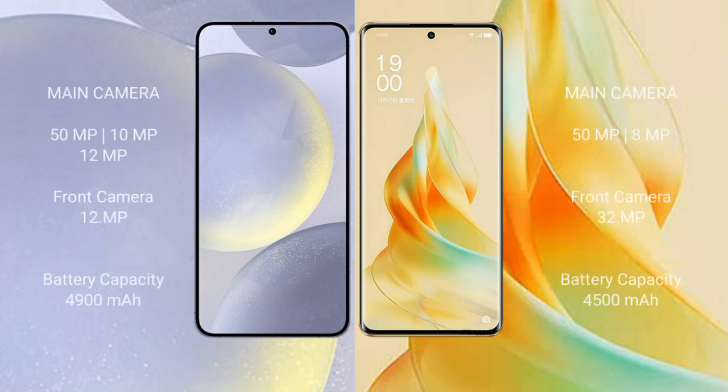Samsung Galaxy S24 Plus features a rear triple camera setup of 50MP plus 10MP plus 12MP, and a front camera of 12MP. OPPO Reno 9 Pro features a rear dual camera setup of 50MP plus 8MP, and a front camera of 32MP.